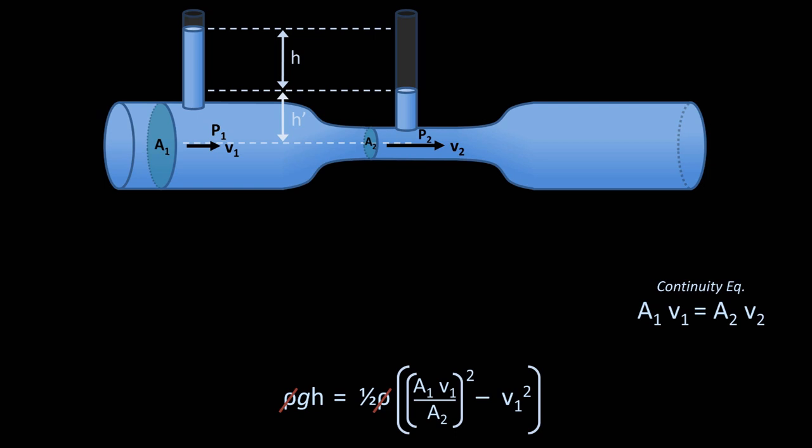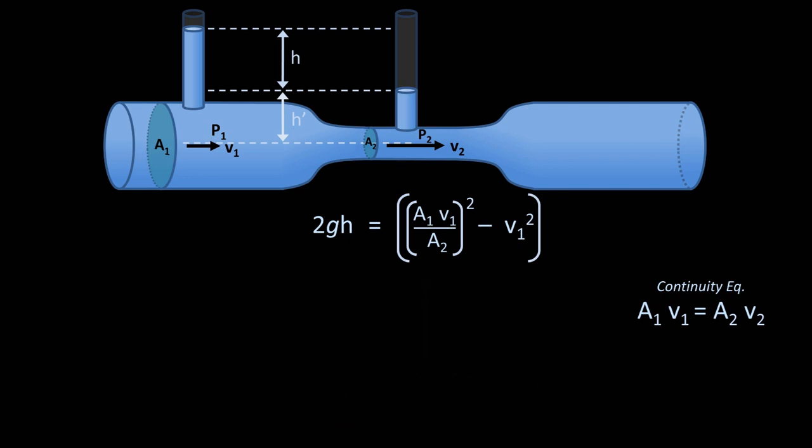At this point we leave physics behind and concentrate just on the algebra. Multiply both sides of the equation by 2. Factor out the v1 squared. And solve for v1.